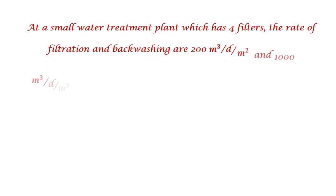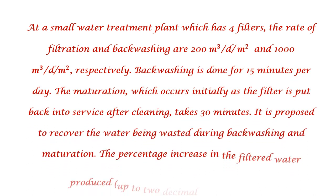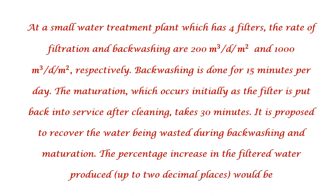This is a numerical from the filtration portion of environmental engineering. A small water treatment plant has four filters. The rate of filtration and backwashing are 200 m³/day/m² and 1000 m³/day/m² respectively. Backwashing is done for 15 minutes per day, and maturation — which occurs initially after the filter is put back into service after cleaning — takes 30 minutes. It is proposed to recover the water wasted during backwashing and maturation. Find the percentage increase in filtered water produced, to two decimal places.